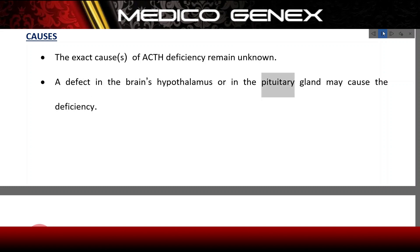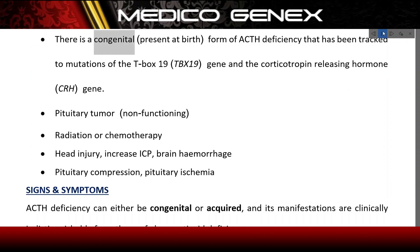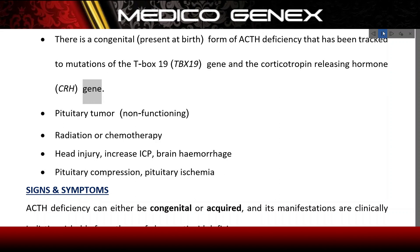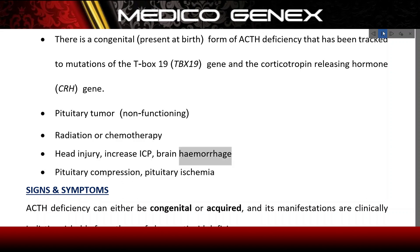A defect in the brain's hypothalamus or in the pituitary gland may cause the deficiency. There is a congenital (present at birth) form of ACTH deficiency that has been tracked to mutations of the TBX19 gene and the corticotropin-releasing hormone (CRH) gene. Acquired causes include pituitary tumor (non-functioning), radiation or chemotherapy, head injury, increased ICP, brain hemorrhage, pituitary compression, and pituitary ischemia.